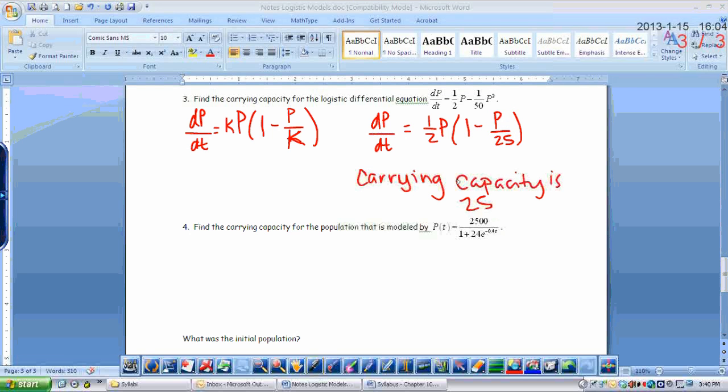Alright, number 4 is a little bit different. Find the carrying capacity for the population that's modeled by p of t equals 2,500 over 1 plus 24e to the negative 0.4t. Okay, this time we're given the actual population equation. So we're not given the differential equation, we're given the actual population equation.